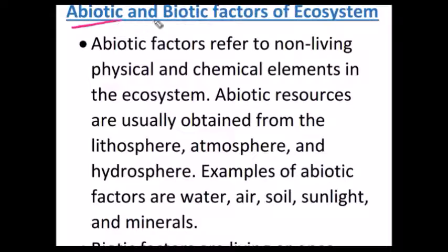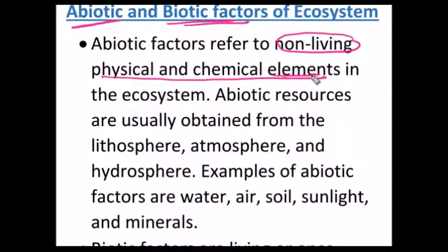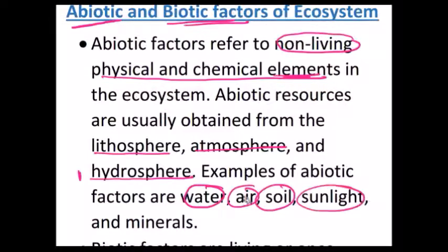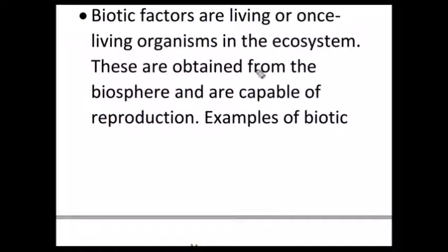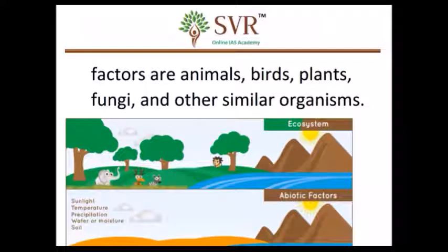Now let us discuss briefly about abiotic and biotic factors. Abiotic factors are non-living physical and chemical elements — they are usually obtained from the lithosphere, atmosphere, and hydrosphere. Examples of abiotic factors are water, air, soil, sunlight, and minerals. Biotic factors are living organisms in the ecosystem — they are obtained from the biosphere, and the main point is that they should be capable of reproduction. Examples of biotic factors include plants, animals, birds, fungi, and so on.